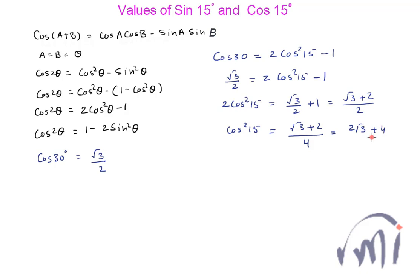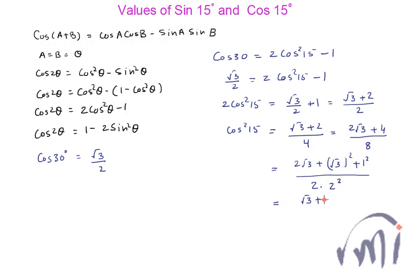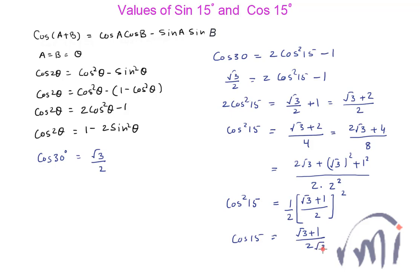Multiplying by 2/2 gives (2√3 plus 4) divided by 8. The 4 can be written as 3 plus 1, where 3 is (√3)² and 1 is 1², so the numerator becomes (√3 plus 1)² divided by 2 times 4. This means cos²15 equals (√3 plus 1)/2 whole squared times 1/2. Taking the square root, cos 15 equals (√3 plus 1)/2 times 1/√2, so cos 15 equals (√3 plus 1) divided by 2√2.